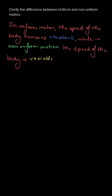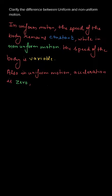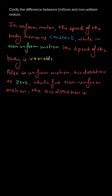Now let's talk about acceleration in both types of motion. In uniform motion, acceleration is zero, because the speed is constant. We know that acceleration is the rate of change of velocity, so since the speed is not changing, velocity is also not changing, and hence the acceleration will be zero.